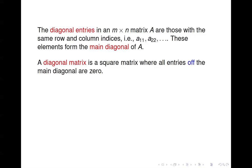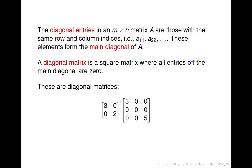A diagonal matrix is a square matrix where all the entries off the main diagonal are 0. So the only place you can have non-zero values is on the diagonal. Here are a couple of diagonal matrices. Notice that off the diagonal you have all 0s, so the main diagonal is just 1, 1, 2, 2, 3, 3 in this case.